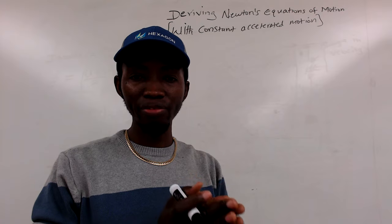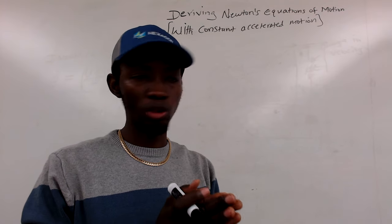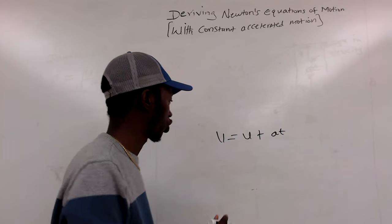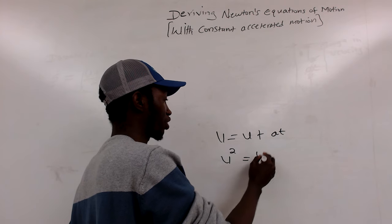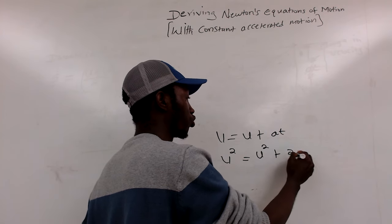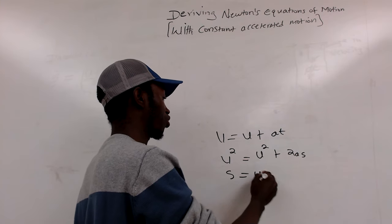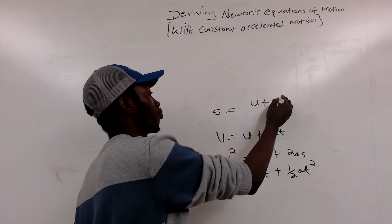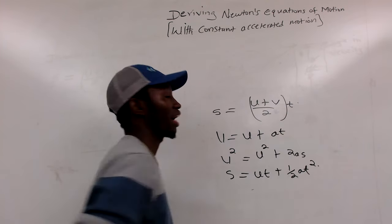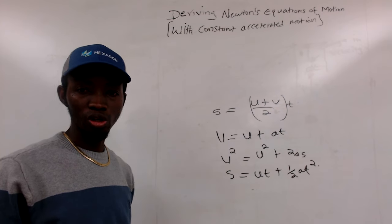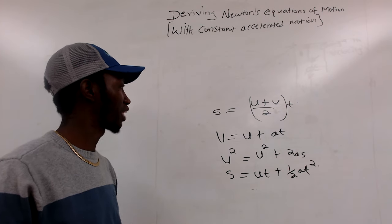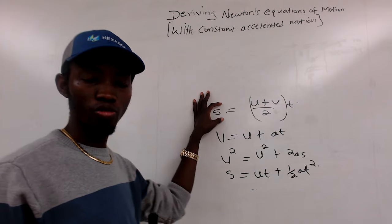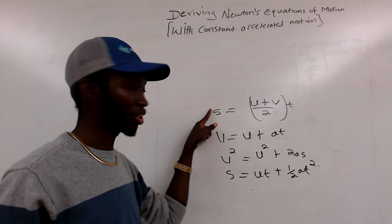When we derive the basic equations of motion, which we have four of them: the first one is v equals u plus at; the next one is v squared equals u squared plus 2as; the third one is s equals ut plus half at squared; and we have the last one, s equals u plus v all over 2 multiplied by t. These are the four equations of motion. The parameter s tells us about the total distance covered.